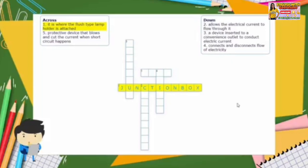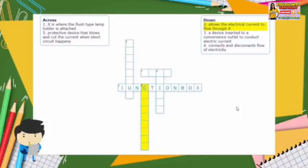Number two: allows electrical current to flow through it. The answer is conductor.